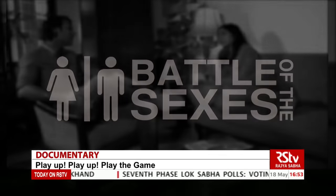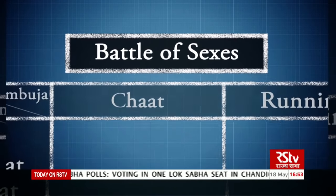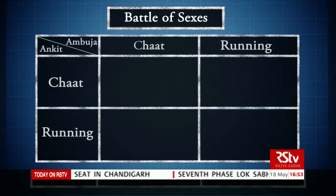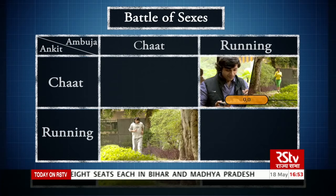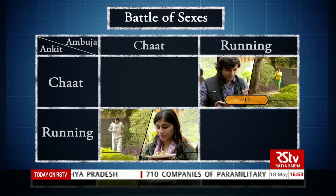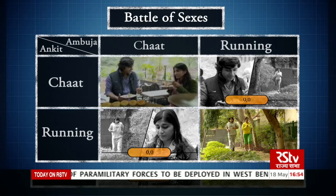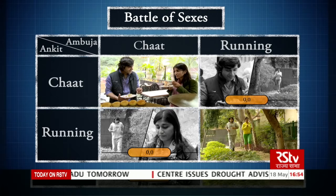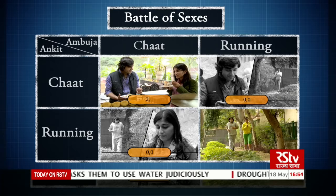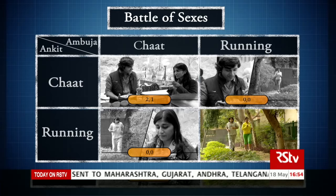Let's map their choices onto a matrix, assigning values to each option. If he eats chaat and she goes for a run, they get 0-0. Similarly, if he goes for a run and she eats chaat, they also get 0-0. This is because the most important thing for the couple is to be together. If they each do something separate, they get almost no joy from the evening. Now, if they both go to eat chaat, the man gets a payoff of two — he gets to hang with his wife and eat chaat — while the woman gets a payoff of one, since she gets quality time with her husband but no joy from the chaat. Similarly, if they both go for a run, the woman gets a payoff of two and the man gets a payoff of one.